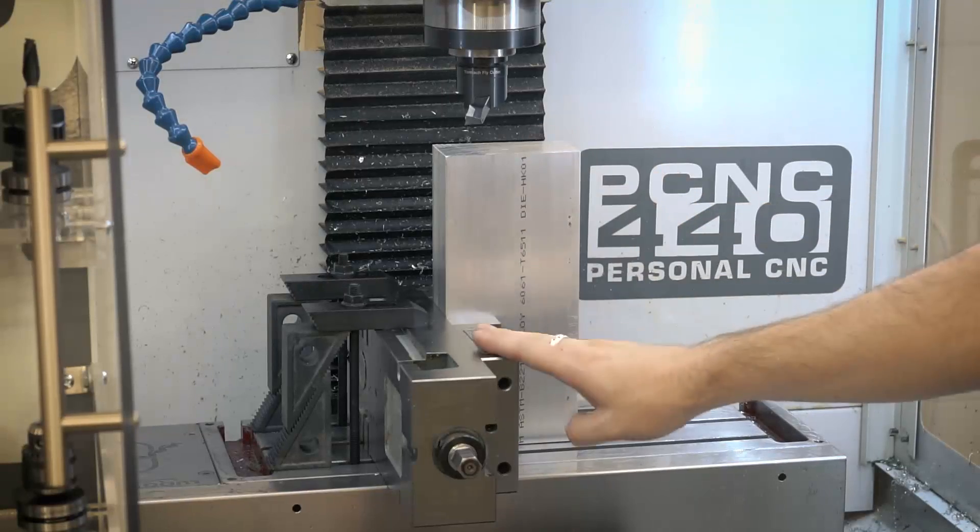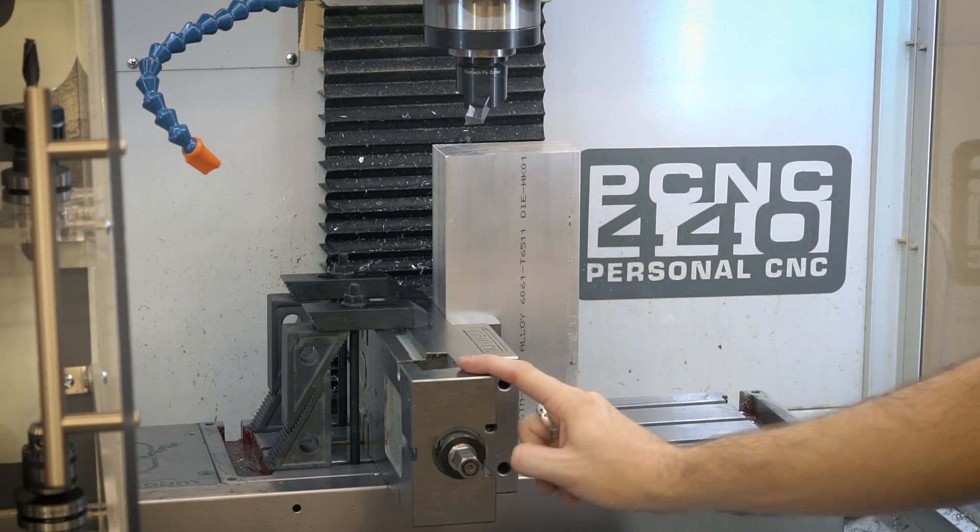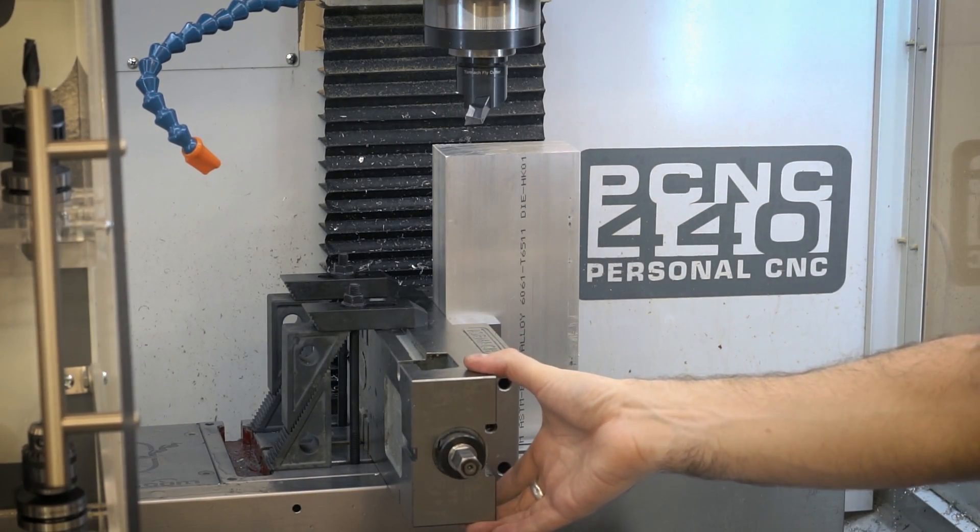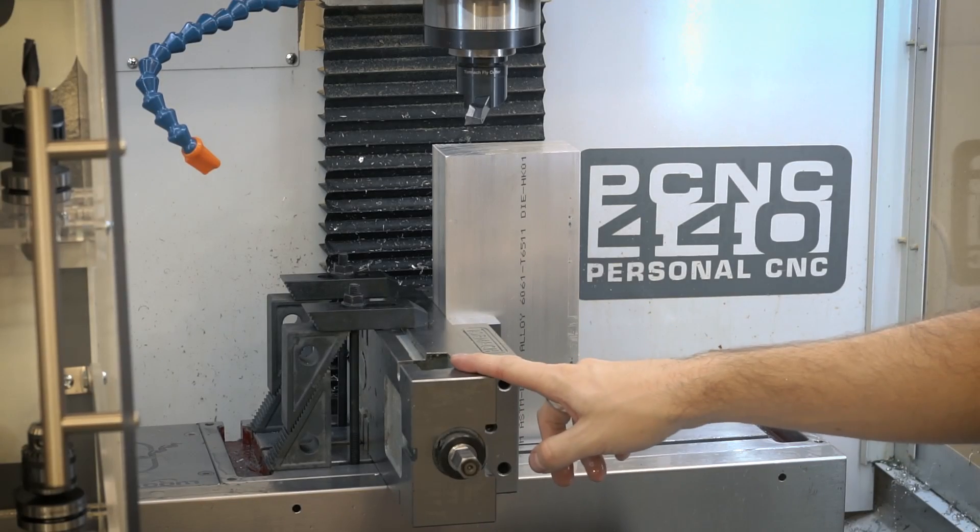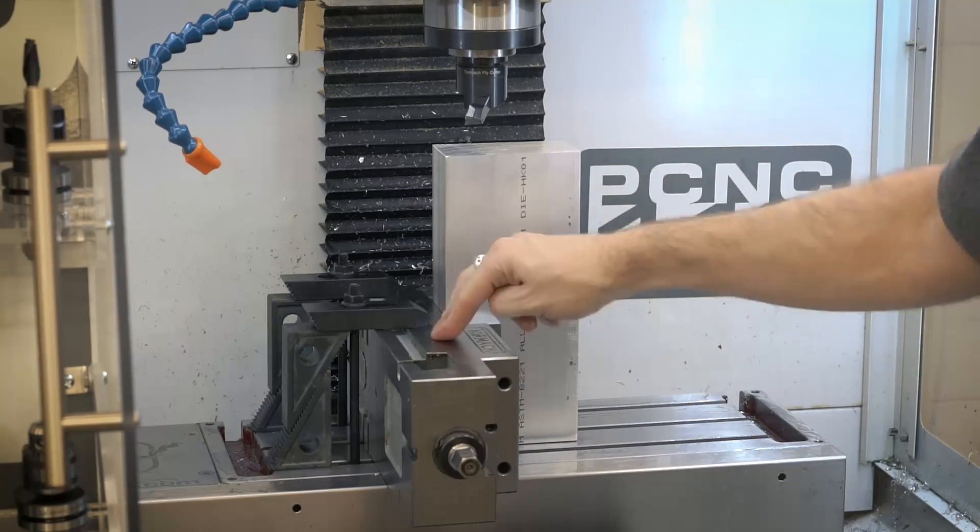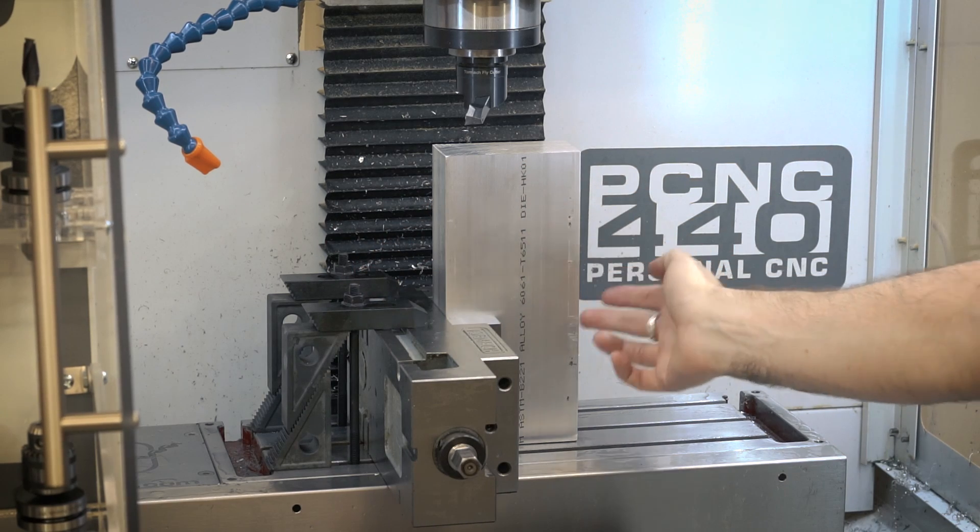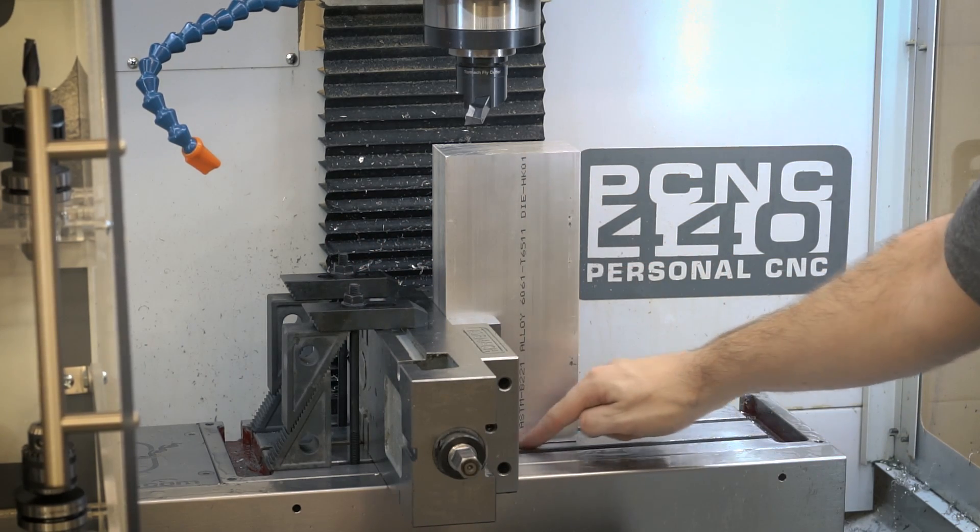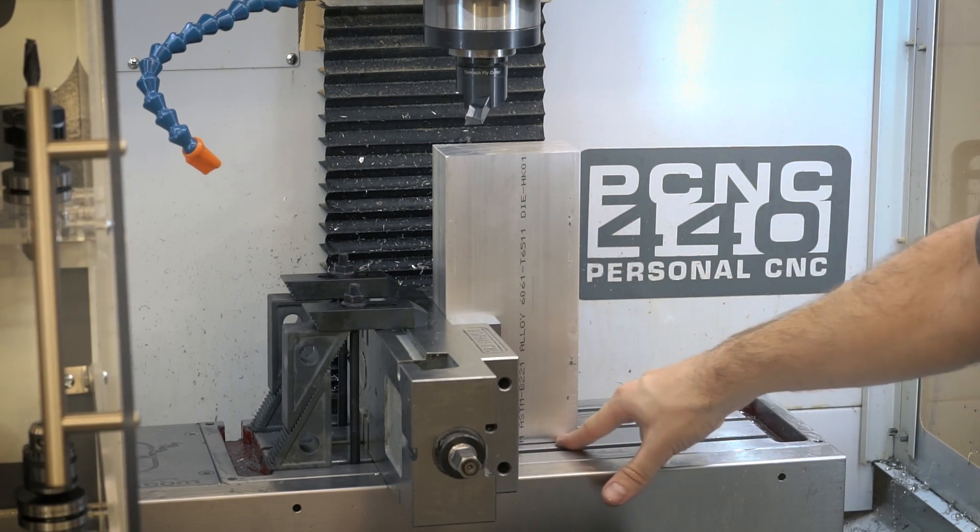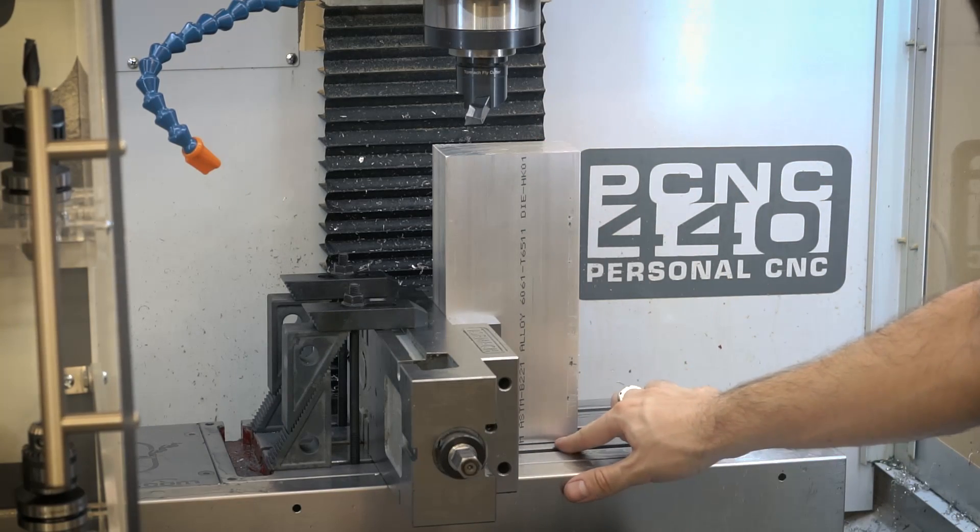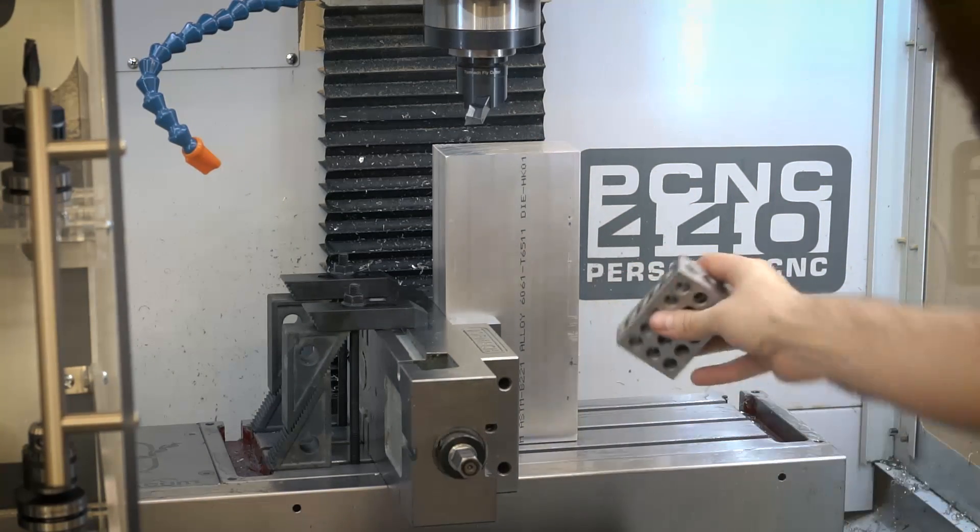And I've got the block of aluminum set up in the mill. And you can see I have the vise set up vertically. This is the 4-inch vise that is packaged with the 440. I have it just clamped down to the table with some toe clamps over here. And you can see I have a small gap underneath. And that's because I'm not sure if that face is parallel to this face. So I need to raise it up a little bit. And I can check.